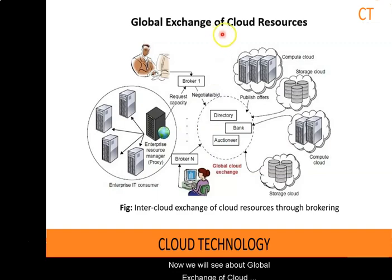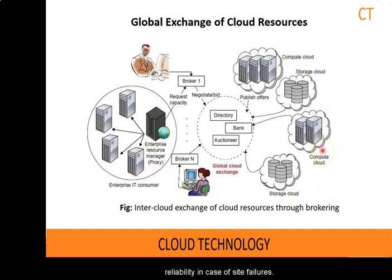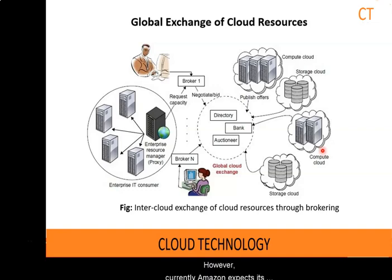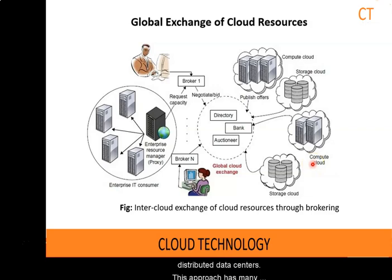Now we will see about the global exchange of cloud resources. In order to support a large number of application service consumers from around the world, cloud infrastructure providers — that is, Infrastructure as a Service providers — have established data centers in multiple geographical locations to provide redundancy and ensure reliability in case of site failures. For example, Amazon has data centers in the United States, one on the east coast and another on the west coast, and in Europe. However, currently Amazon expects its cloud customers, i.e., software service providers, to express a preference regarding where they want their application services to be hosted. Amazon does not provide seamless automatic mechanisms for scaling its hosted services across multiple geographically distributed data centers.